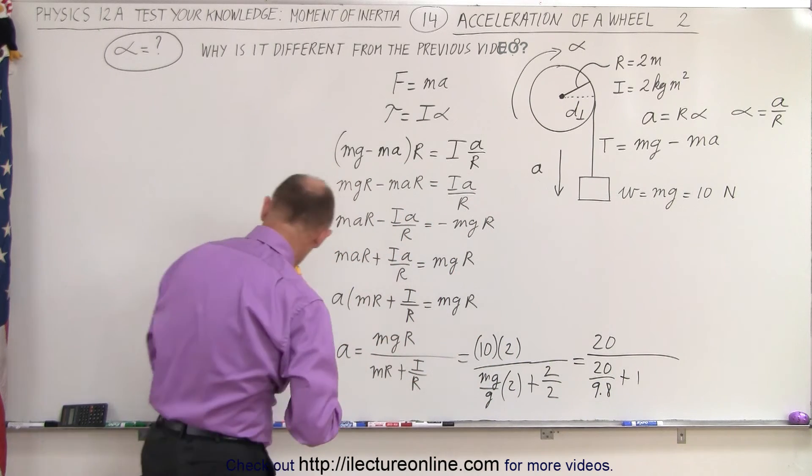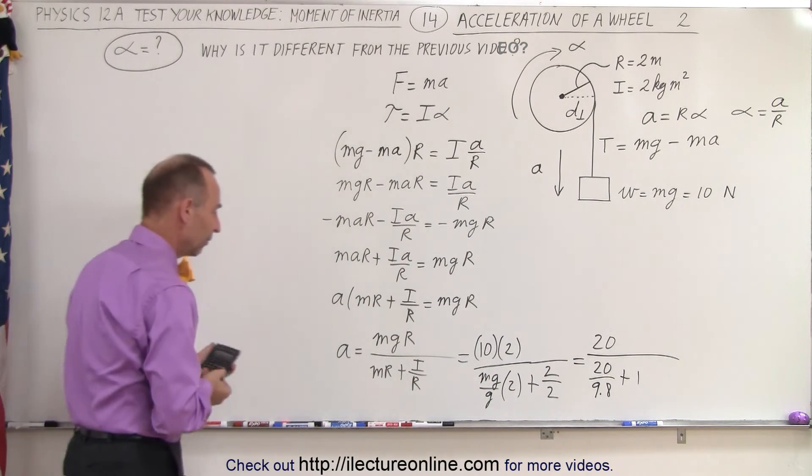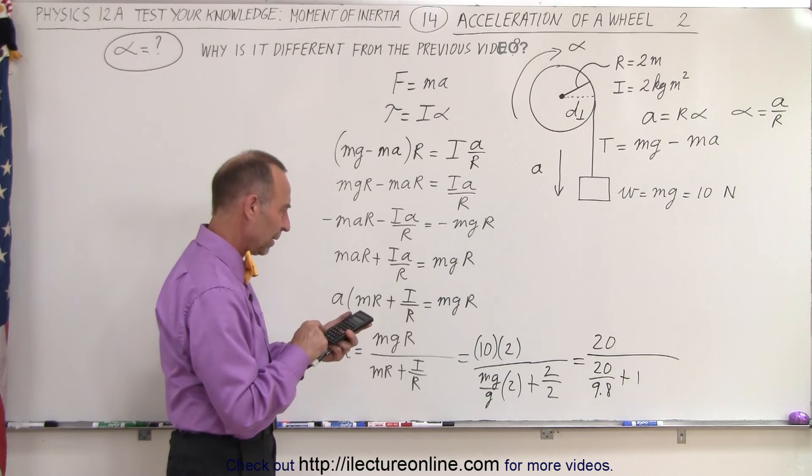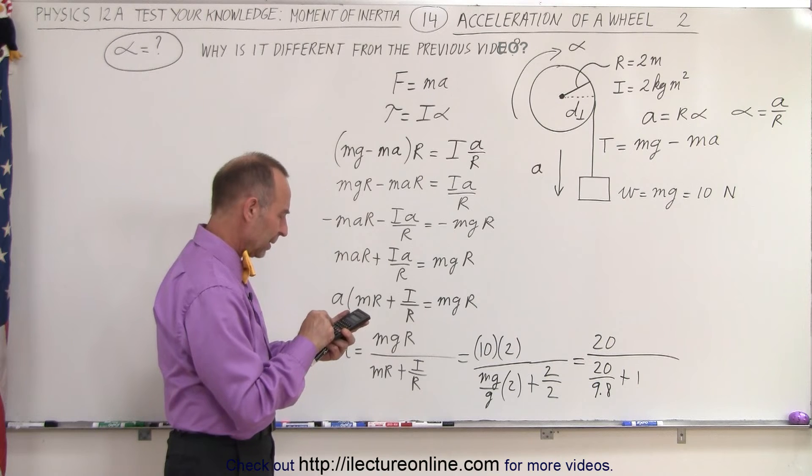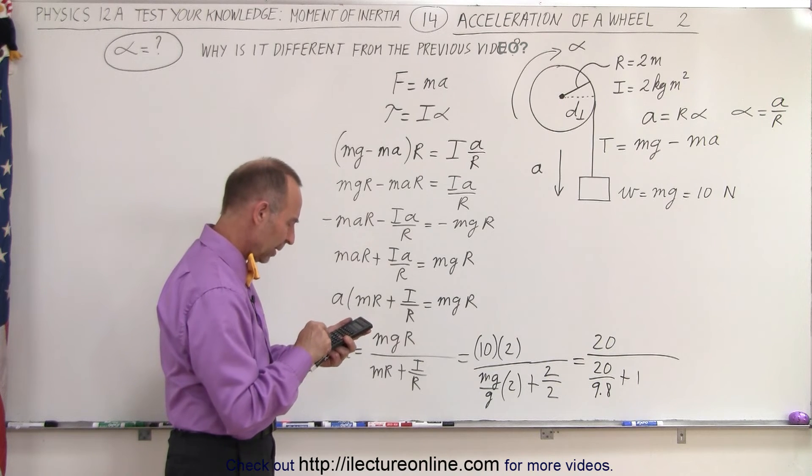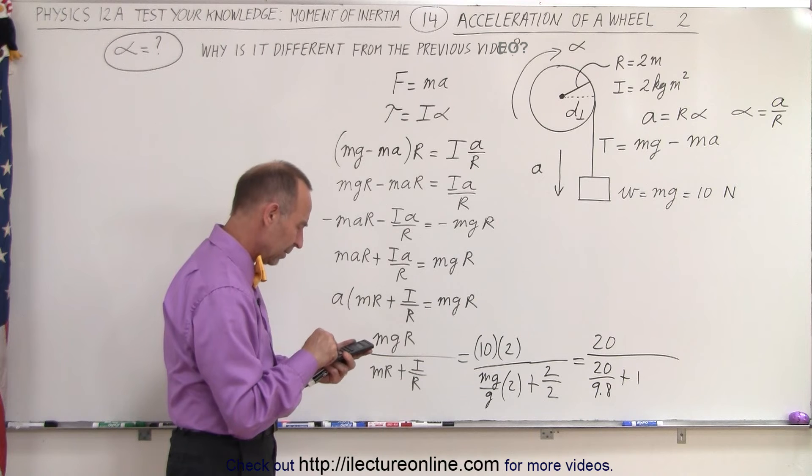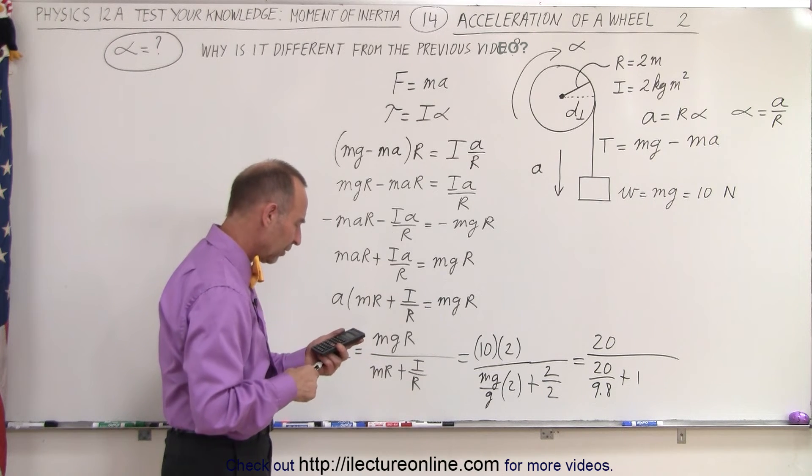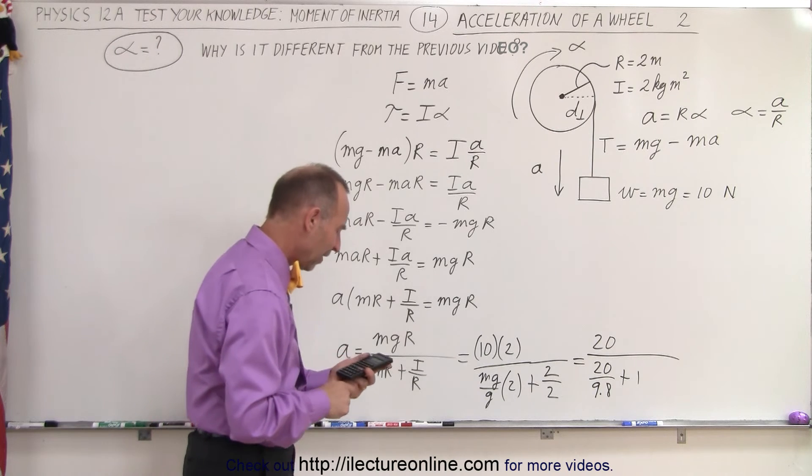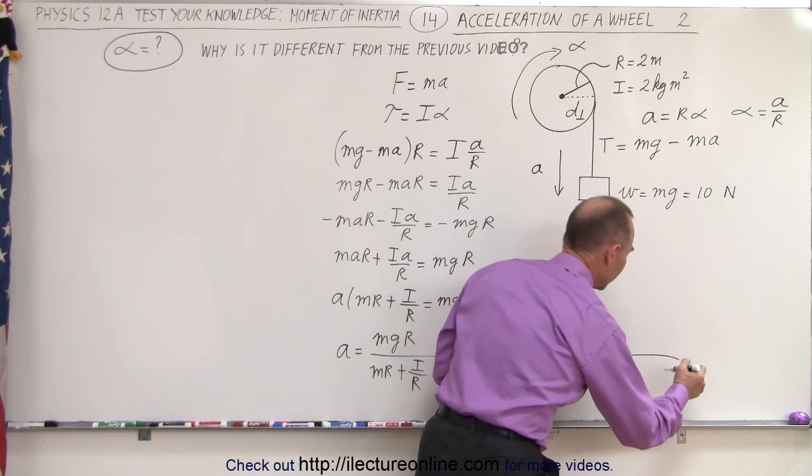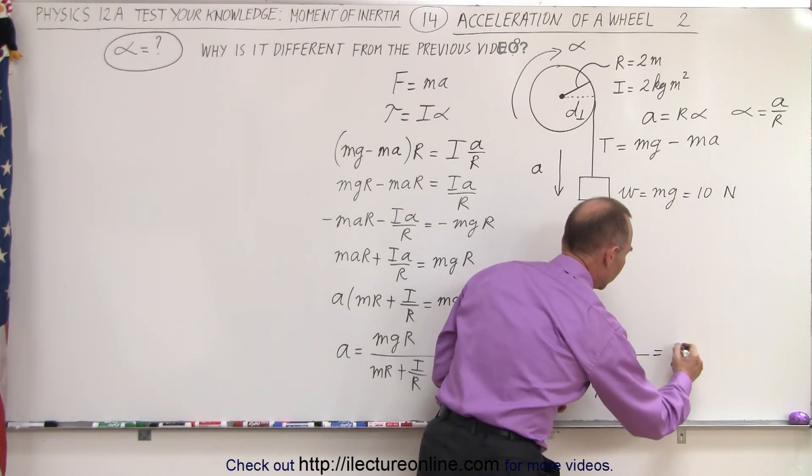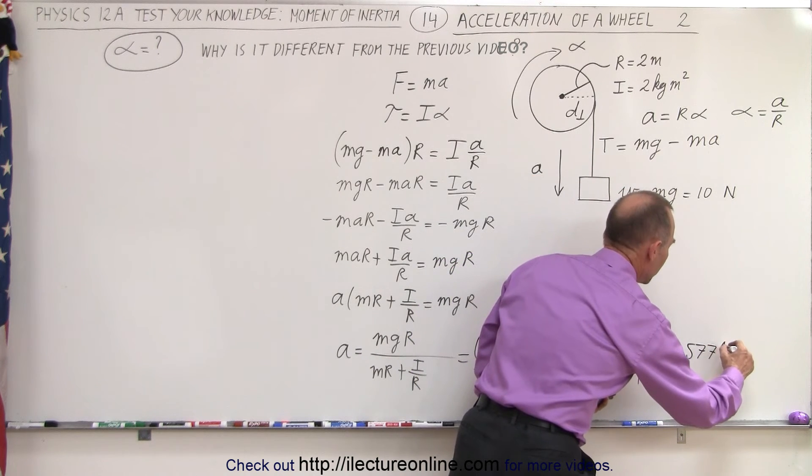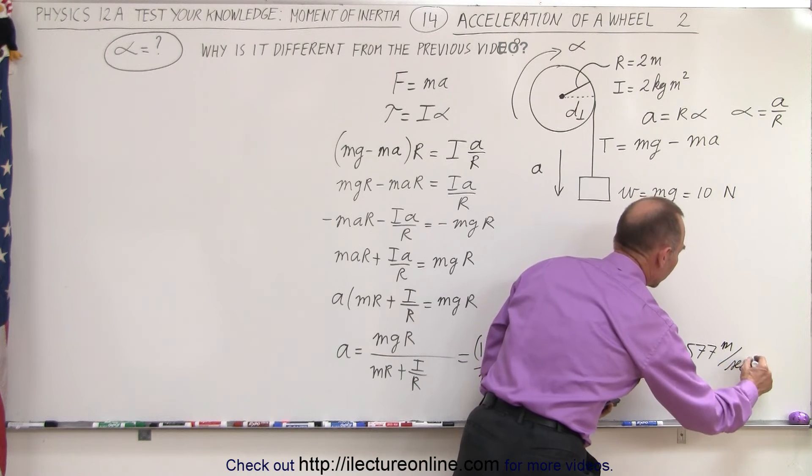So now when we grab a calculator, which is hiding over here, we can figure out what the linear acceleration is equal to. So we get 20 divided by 9.8 plus 1, take that to the numerator and multiply it times 20. So it gives me 6.577, that would be meters per second squared.